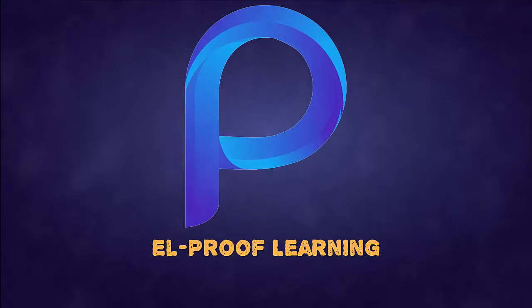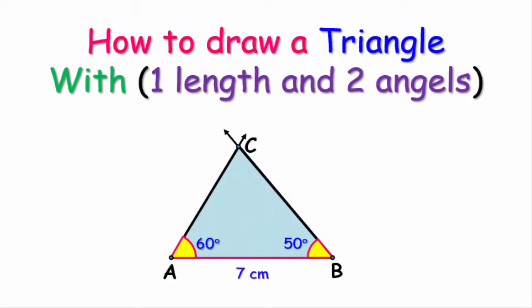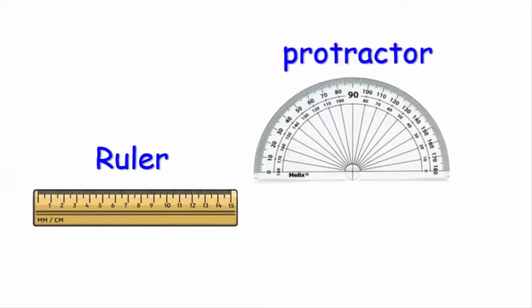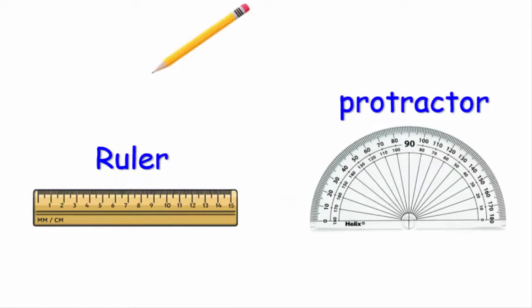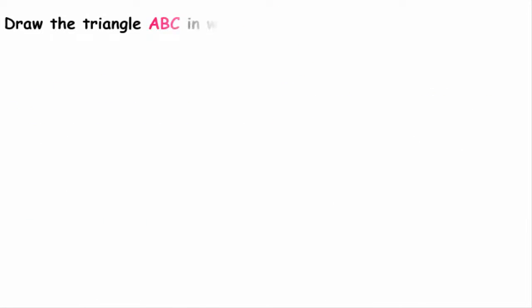Hello, welcome to All Proof Learning Channel. In this video, we will explain how to draw a triangle using one side length and the measures of two angles. The main tools that we use are a ruler, protractor, and of course a pencil.